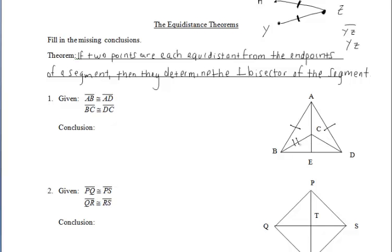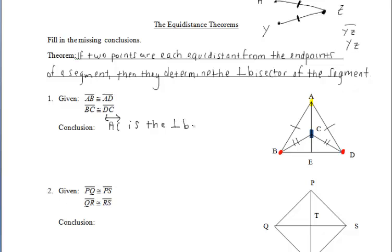Taking a look at the first example, let's go ahead and mark our diagram with tick marks to see what we're working with. We have a couple sets of congruent segments. Based off of the first given, we have point A that is equidistant from the endpoints B and D, and point C that's also the same distance from point B as it is from point D. So that means those two points, A and C, determine the perpendicular bisector of segment BD.